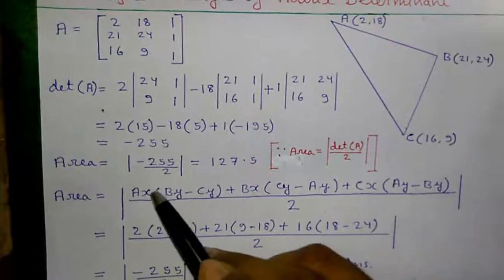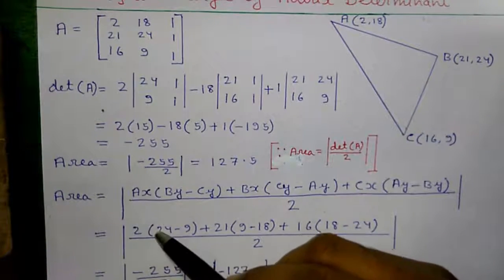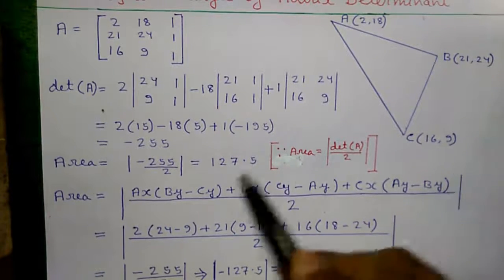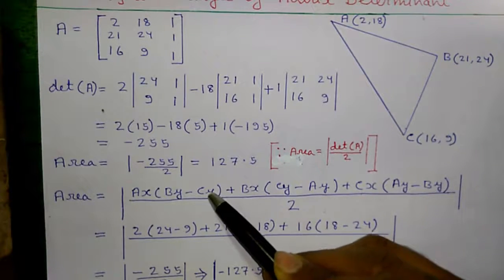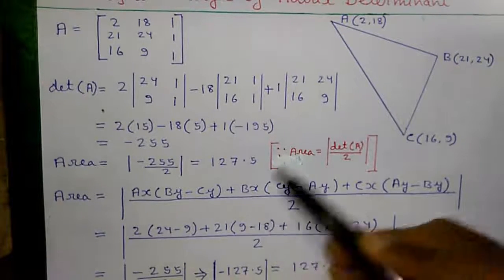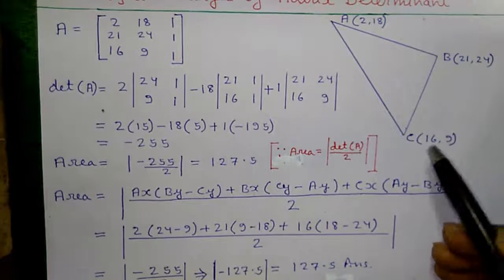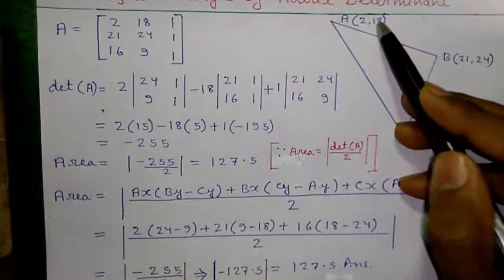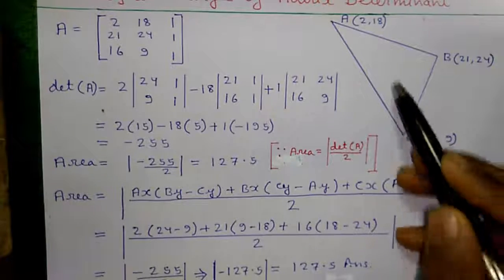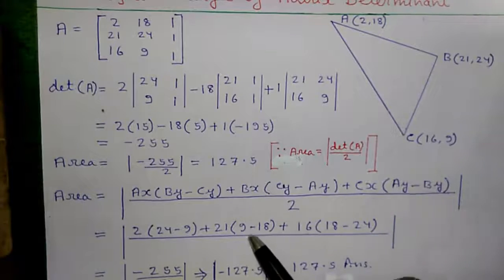Let's implement the formula. A x is the x coordinate value of vertex A, which is 2 into B y is the y coordinate value of vertex B, which is 24 minus C y is the y coordinate value of vertex C, which is 9. That is 24 minus 9. Plus B x is the x coordinate value of vertex B is 21 into C y is 9 minus A y is 18. Plus C x is 16 into A y is 18 minus B y is 24 divided by 2.